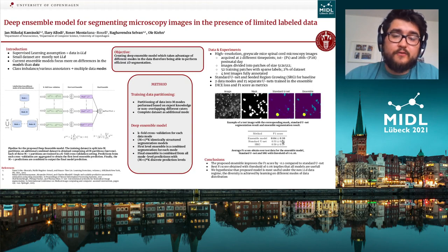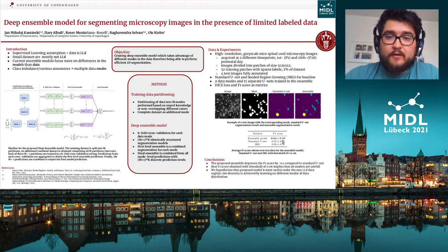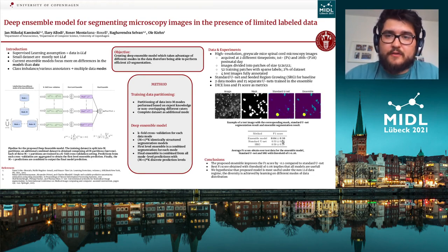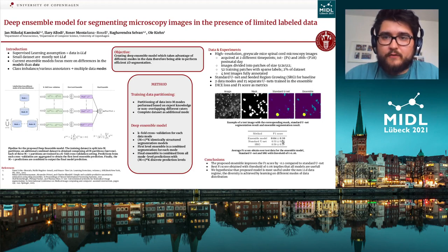In conclusion, our proposed ensemble improved the F1 score by around 0.1 compared to the standard U-Net. What is interesting is that the best F1 score was obtained with a threshold of 0.06, which is equivalent to 1 over 15. This would imply that all the models constituted in the ensemble are useful, and that every one of them improves the F1 score.